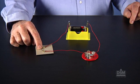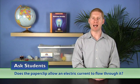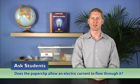Students should close and open the paperclip to turn the bulb on and off. Ask students, does the paperclip allow an electric current to flow through it? Students should respond that the paperclip allows an electric current to flow, therefore it is a conductor.